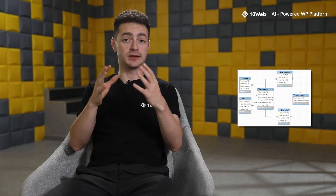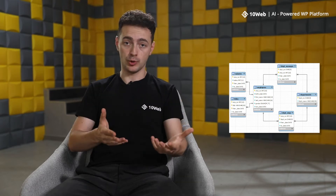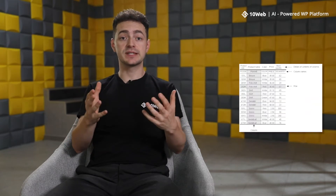A relational database is essentially a digital store that collects data and organizes it in tables according to the relational model. In this model, tables consist of rows and columns, and the relationships between data elements in those rows and columns all follow a strict logical structure where every piece of data is related to each other.